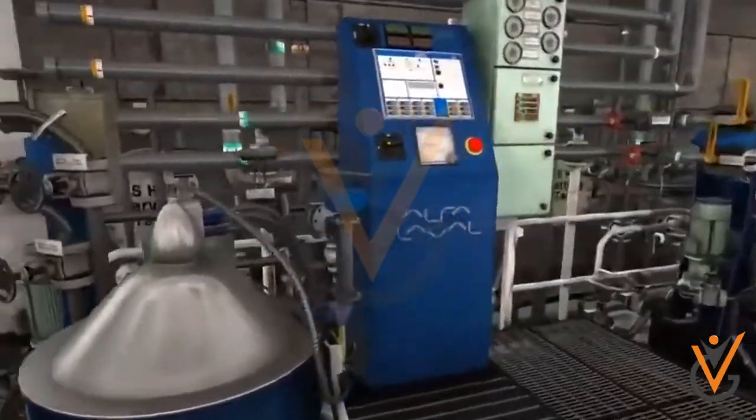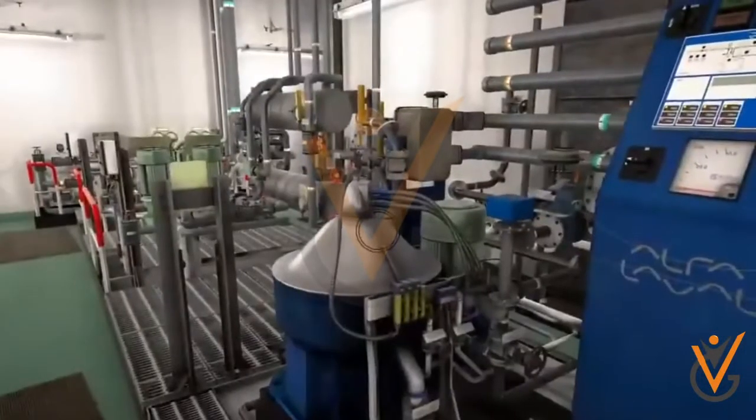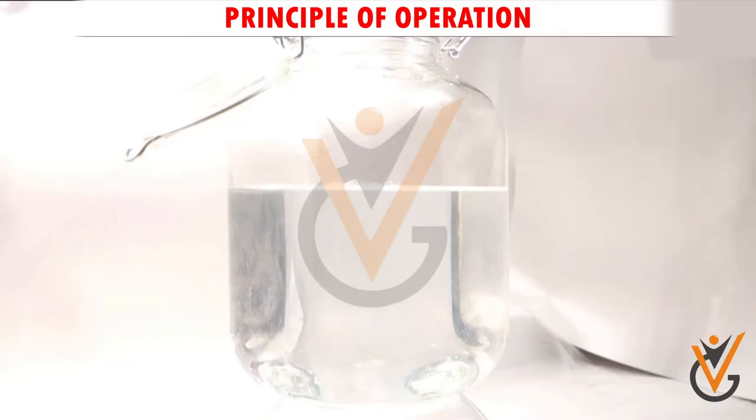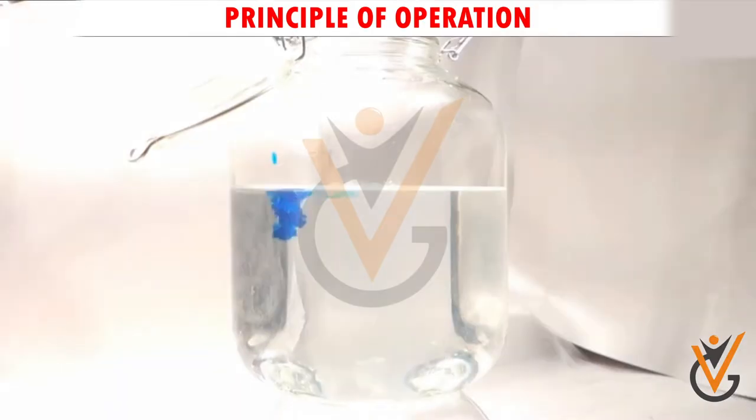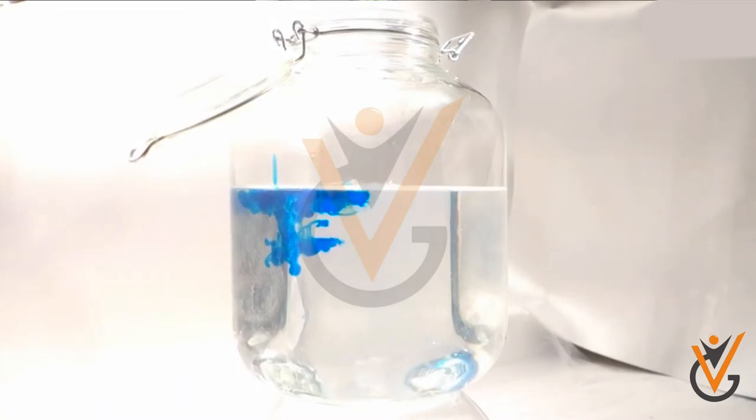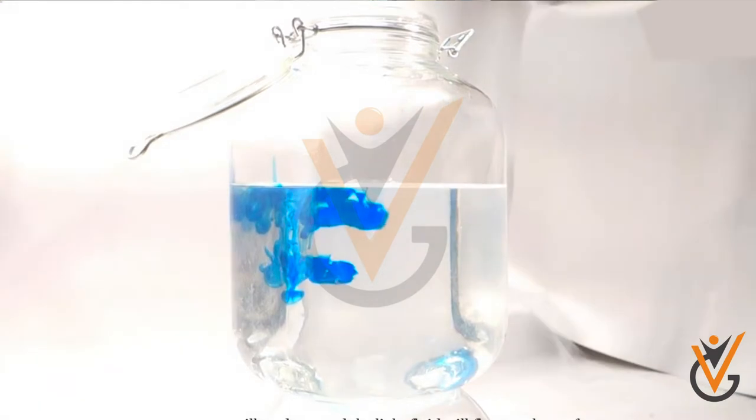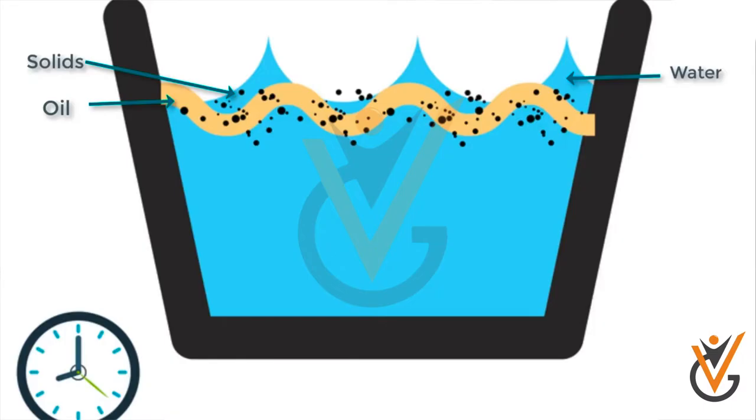Let us see in detail about working principle and construction of purifier used on board ship. Principle of operation: Oil, water and other impurities are of different density. Whenever the oil is subjected to centrifugal force, heavier particles - water and solid - will be thrown outside, and lighter particles will remain close to the center.